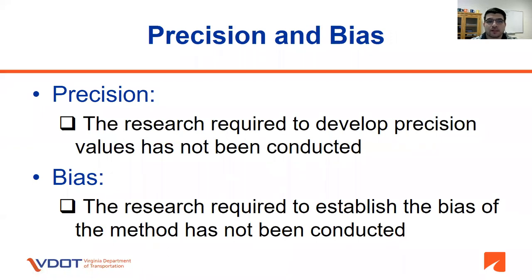Precision and bias: the research required to develop precision values has not been conducted yet and is on its way. For the bias, the research required to establish the bias of the method has not been conducted.